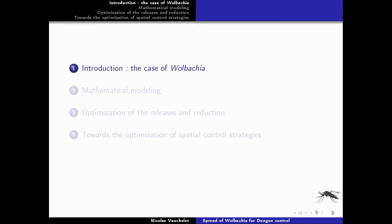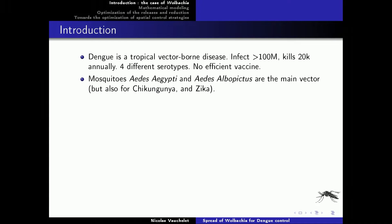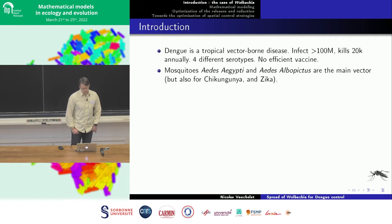Let's start with a presentation of what is Wolbachia. First, some numbers. Dengue is a vector-borne tropical disease — vector-borne means that it is transmitted through a vector, which is a mosquito. It infects more than 100 million people every year and kills 20,000 of them. Up to now, there is no very efficient vaccine, partly because there are four different serotypes. The main vectors are mosquitoes of the Aedes type, particularly Aedes aegypti and Aedes albopictus, which are also vectors for chikungunya and zika.